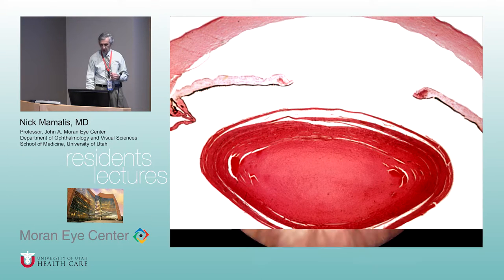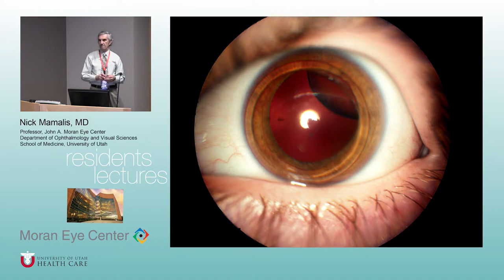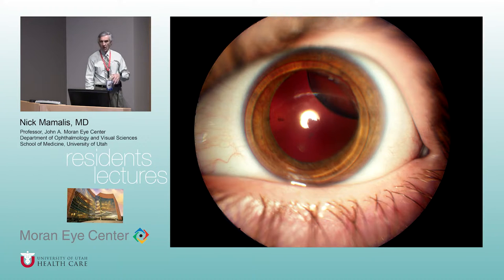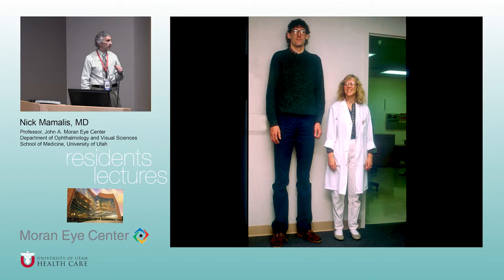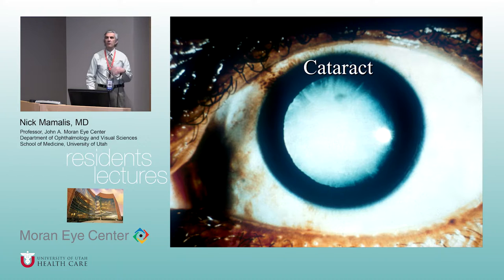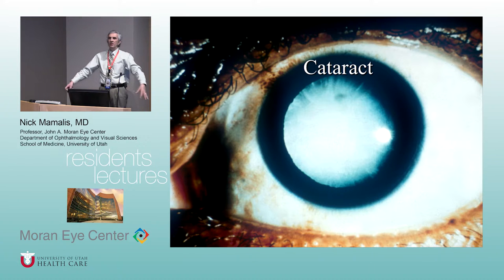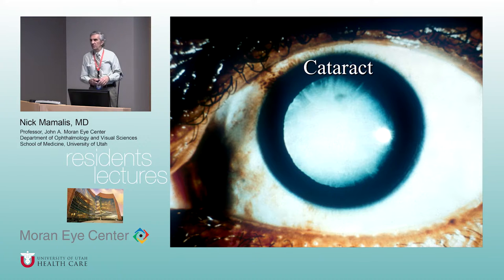Regarding the crystalline lens: a superotemporal lens dislocation is characteristic of Marfan's syndrome — up and out. Down and in is homocystinuria. Weill-Marchesani syndrome features a small spherical lens that can dislocate anteriorly — these patients are short and stubby with short fingers and short lenses, as opposed to tall, spindly Marfan's patients.